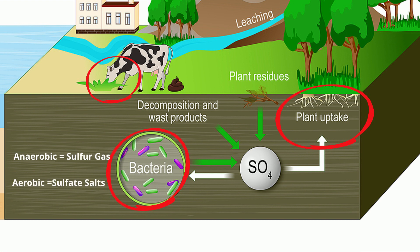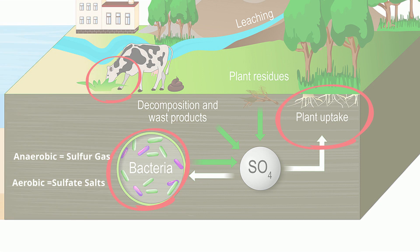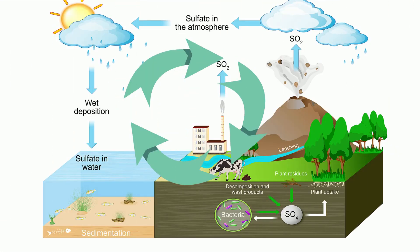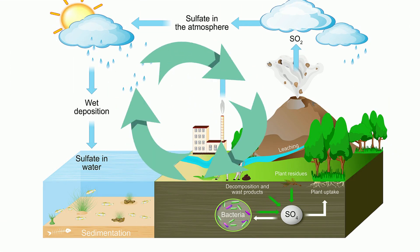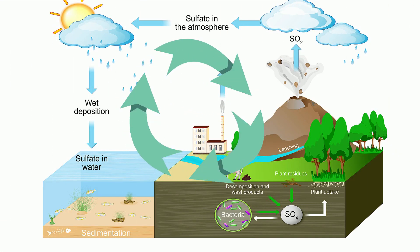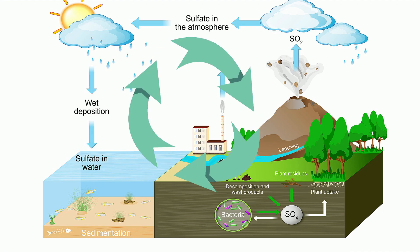Anaerobic bacteria breaks down the hydrogen sulfide into sulfur gas, and aerobic bacteria converts the sulfur into sulfate salts, which again the plants absorb. And then like any other cycle, it just keeps going around and around. So there's the sulfur cycle.